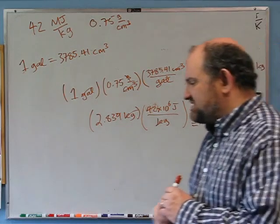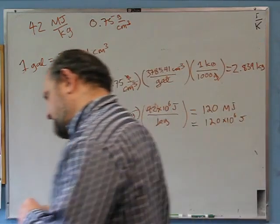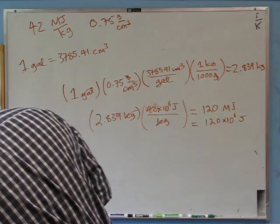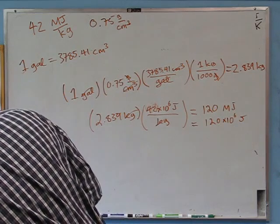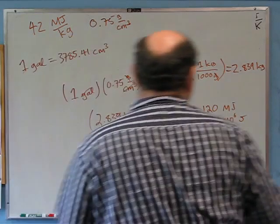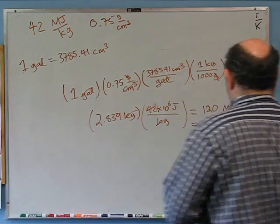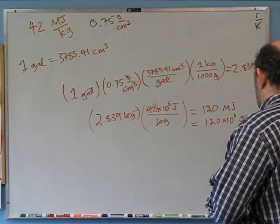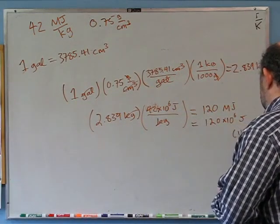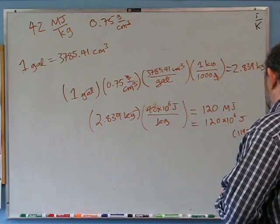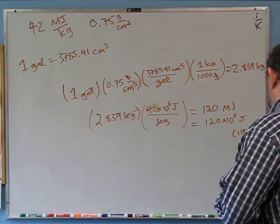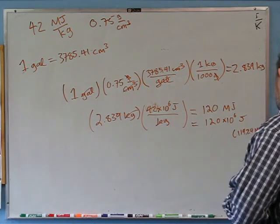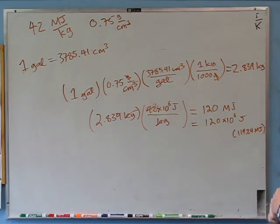That's how much energy is stored — that was the first question. Because this is an intermediate number, I'm keeping extra sig figs: it's really 119.24 megajoules.